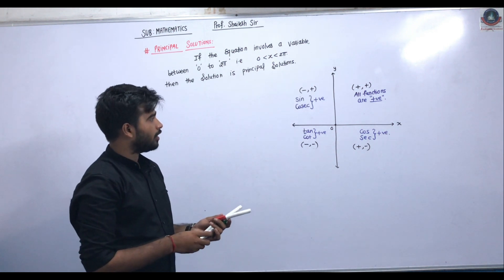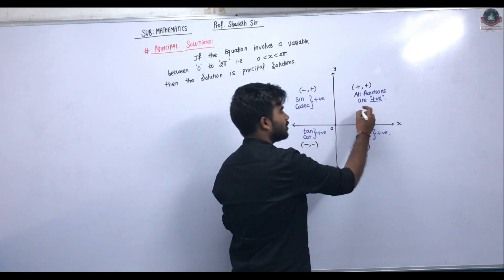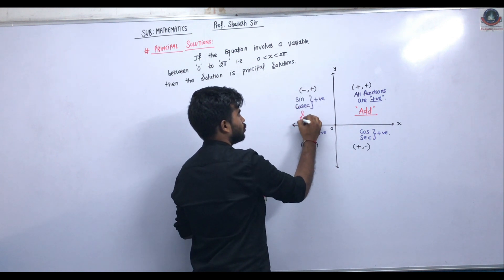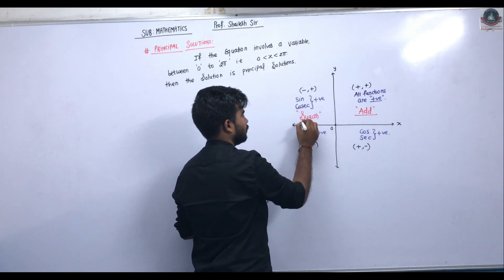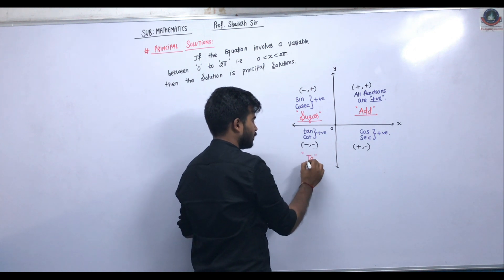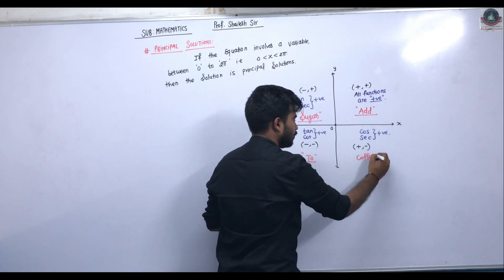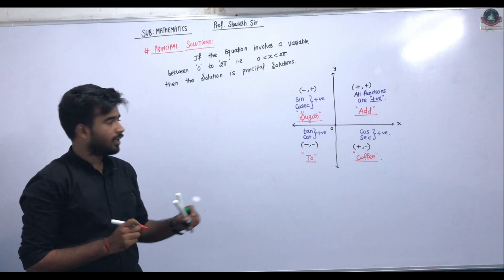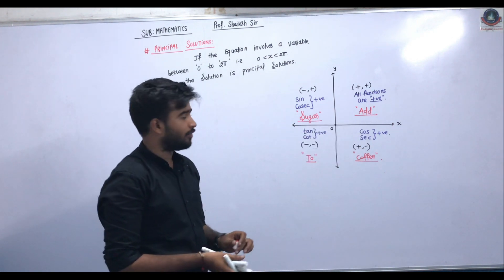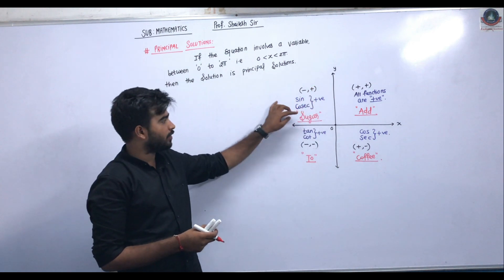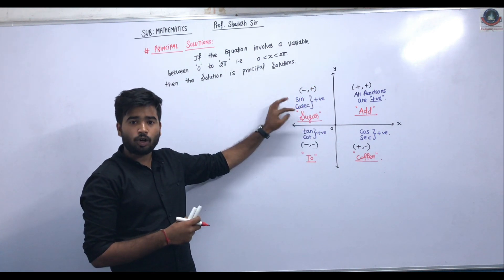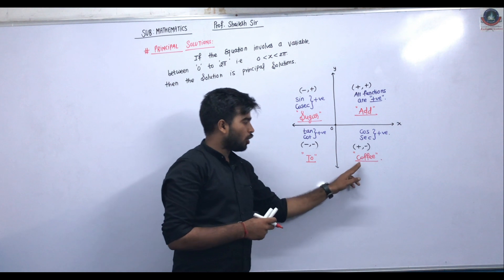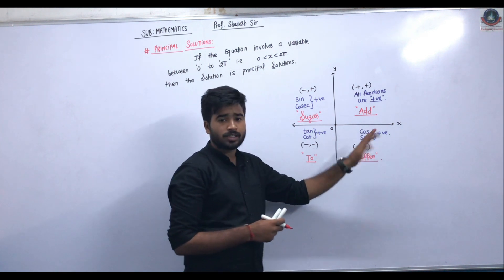We have another golden word which we can say: Add Sugar To Coffee. 'A' means all functions are positive, 'S' means sine and its reciprocal are positive, 'T' means tan and its reciprocal are positive, and 'C' means cos is positive.